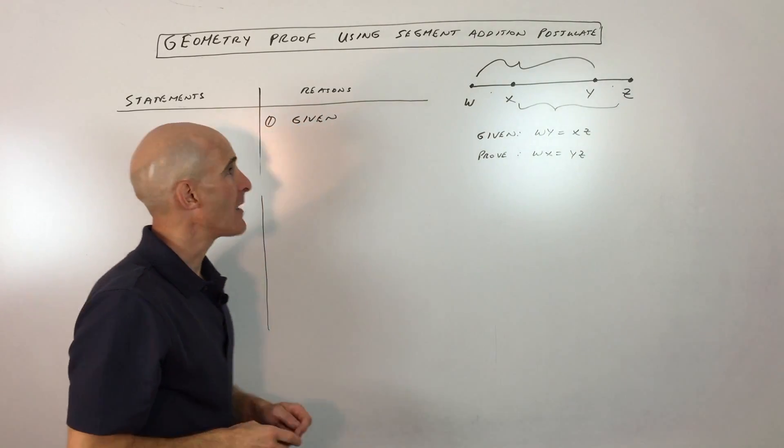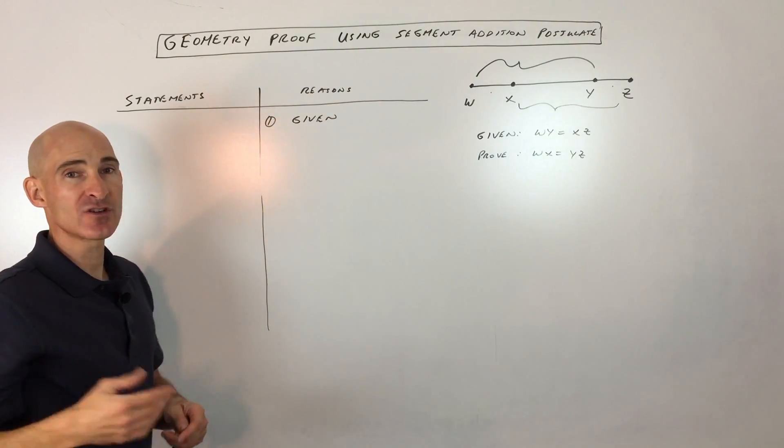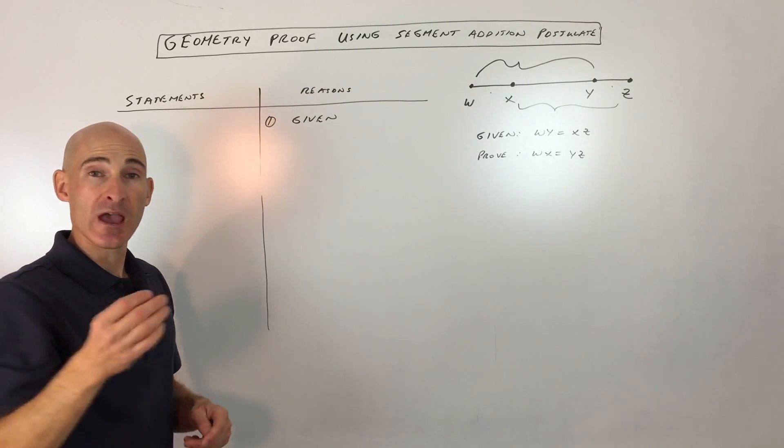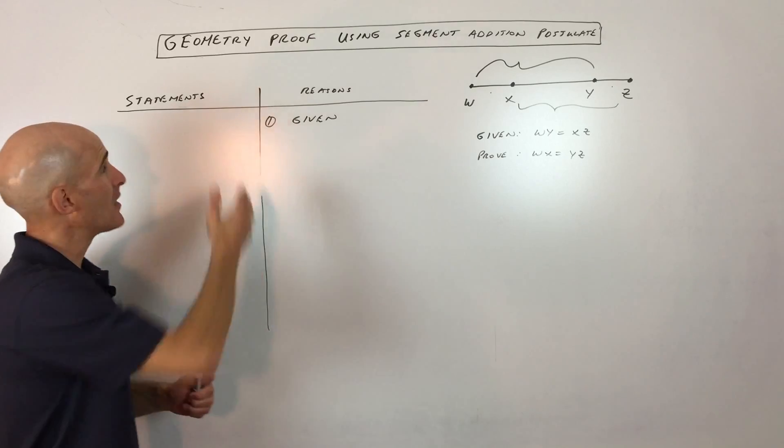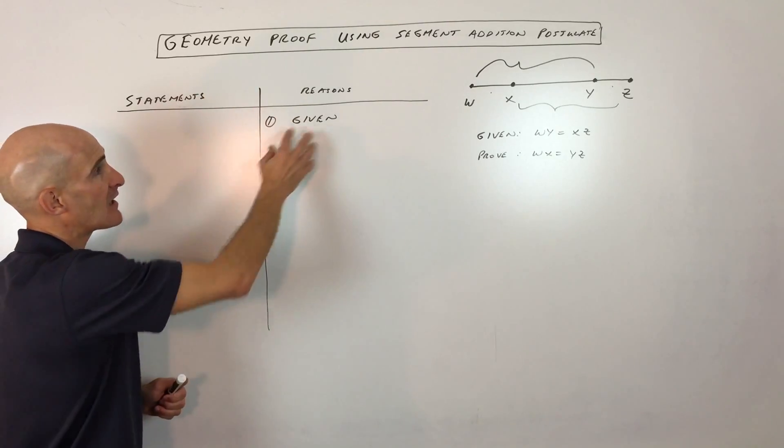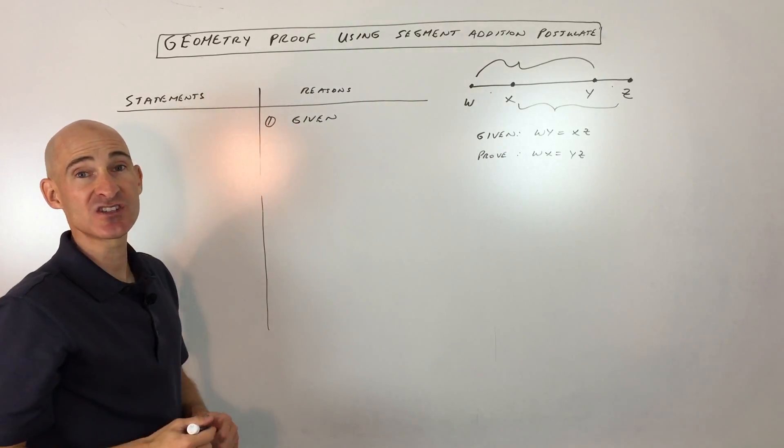So let's go through the proof step by step. Now, we're doing two-column proofs. There's different types of proofs, like paragraph proofs and flow proofs. But in this example, I'm just going to do a two-column proof. The statements on this side and the reasons or the justifications on the right side.